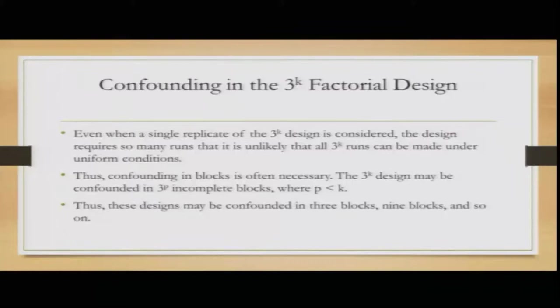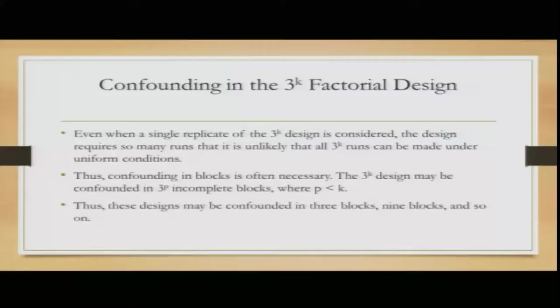Confounding of the 3^k factorial design: even for a single replicate of the 3^k design, so many runs are required that it is unlikely all 3^k runs can be made under uniform conditions. Confounding in blocks is often necessary. The 3^k design may be confounded in 3^(k-p) incomplete blocks where p is less than k, so that the design may be confounded in 3 blocks, 9 blocks, and so forth.